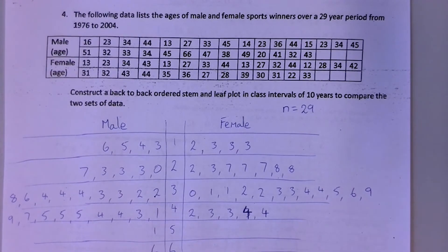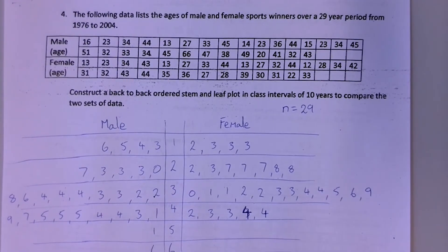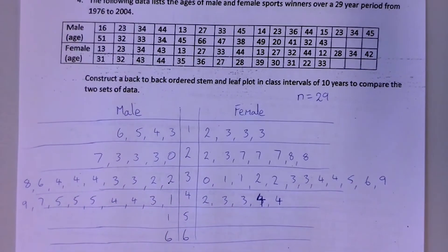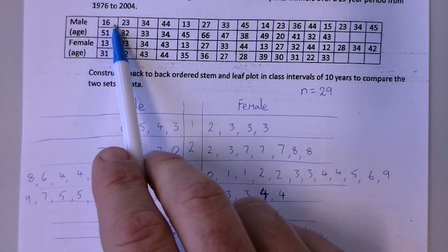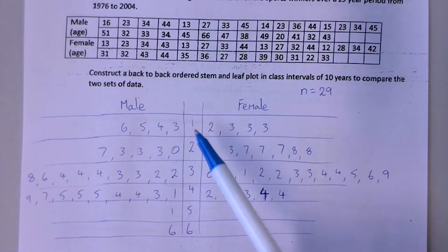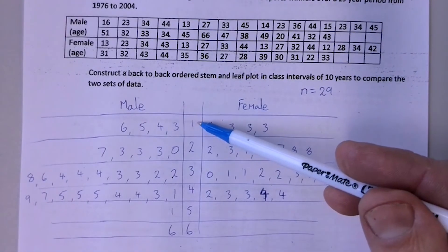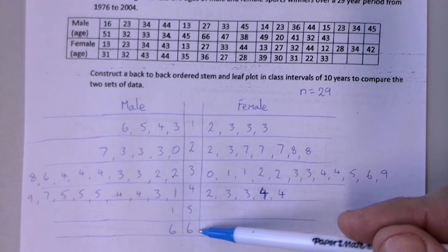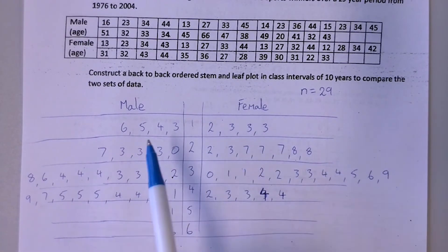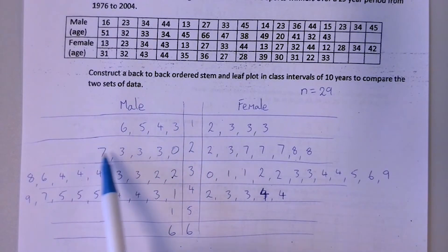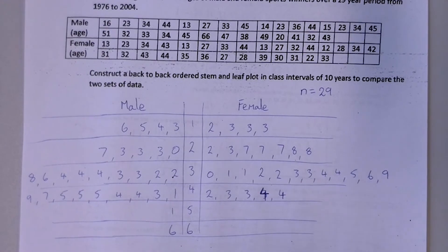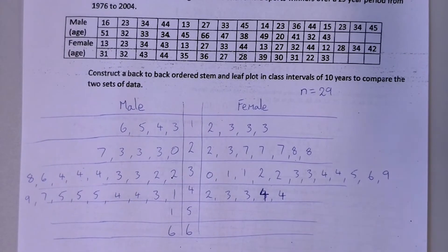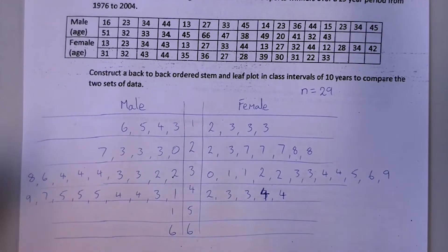So question four is asking you to do an ordered back-to-back stem and leaf plot. So I've gone ahead and done that, because you don't want to watch me do that for five minutes. And what I've done is I've taken the scores at the top and I've had a look through my tens columns and I can see that I've got people in their teens right through to their 60s. So I've put down my tens here and then I've ordered my ones for the males on the left and the females on the right. Now back-to-back stem and leaf plots are quite useful if you want to compare two sets of data. So this is how you draw it up.